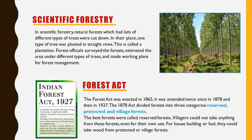These three categories were Reserved Forests, Protected Forests, and Village Forests. The best forests were called Reserved Forests. Villagers could not take anything from these forests, even for their own use — not even for house building or fuel. They could only take wood from protected or village forests, but not from reserved forests.